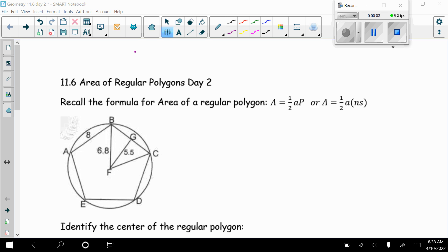Today we're looking at day two of 11.6, area of regular polygons, which is going to continue practicing what we did yesterday. We're going to start out. Recall the formula for the area of a regular polygon: area equals one half the apothem times the perimeter. Remember the perimeter is the number of sides times the side length.